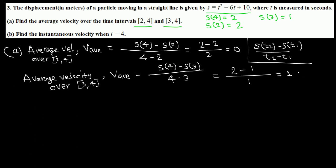In Part B we are supposed to find the instantaneous velocity when t equals 4. There is a formula — the definition — that we need to use, because velocity is the rate of change of displacement, the same as finding the slope of the tangent line. So we're going to find the velocity at t equals 4.